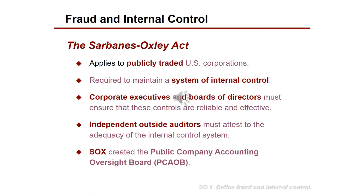When it comes to fraud prevention in the United States, we have what is called the Sarbanes-Oxley Act. This applies to all publicly traded U.S. corporations and requires them to maintain a system of internal control. Corporate executives and boards of directors must ensure that these controls are reliable and effective, and there must be an independent outside auditor that attests to the adequacy of the internal control systems put in place.